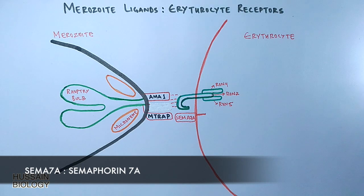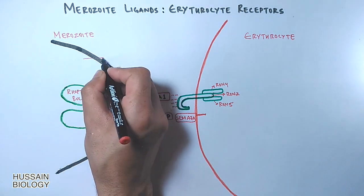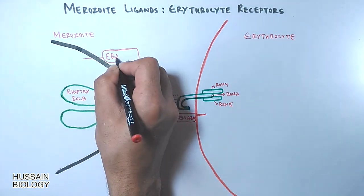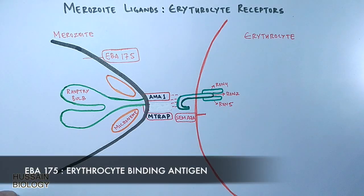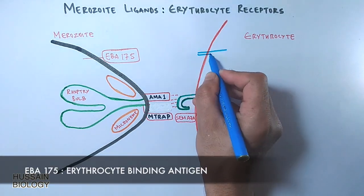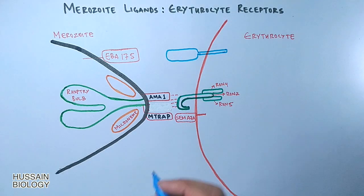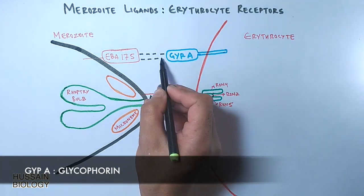Then we have another important interactive protein found on the merozoite surface by the name of EBA175, erythrocyte binding antigen. This EBA175 shows interaction with GYPA of erythrocyte, glycophorin A.